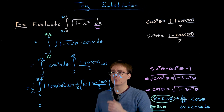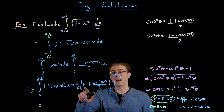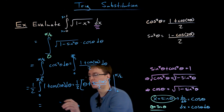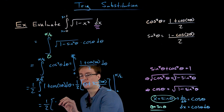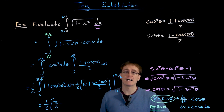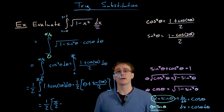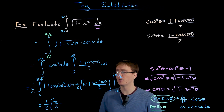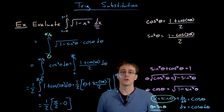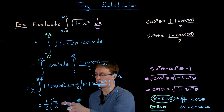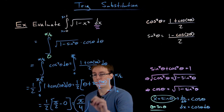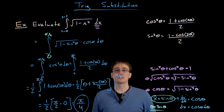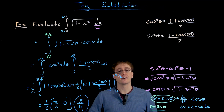Plugging in pi over 2: theta becomes pi over 2 and we get sine of pi, which is 0. So we get 1/2 times pi over 2. Plugging in theta equals 0: all terms are 0, so nothing is contributed from the lower limit. Our answer is therefore 1/2 times pi/2, which equals pi over 4. When we first started this problem, we recognized geometrically that this is just the area of the quarter unit circle, which is exactly pi over 4. This matches the geometric result.